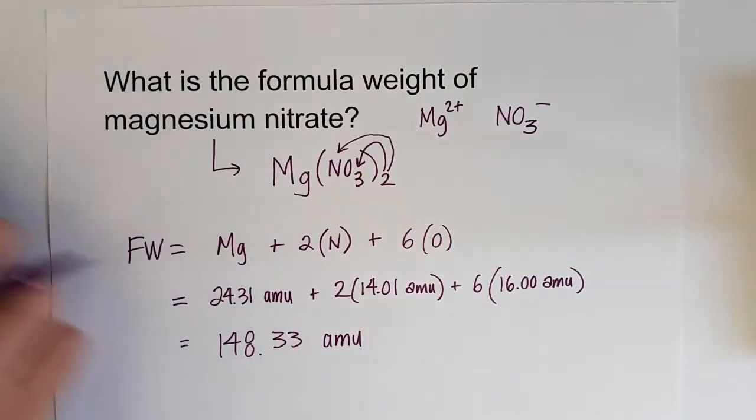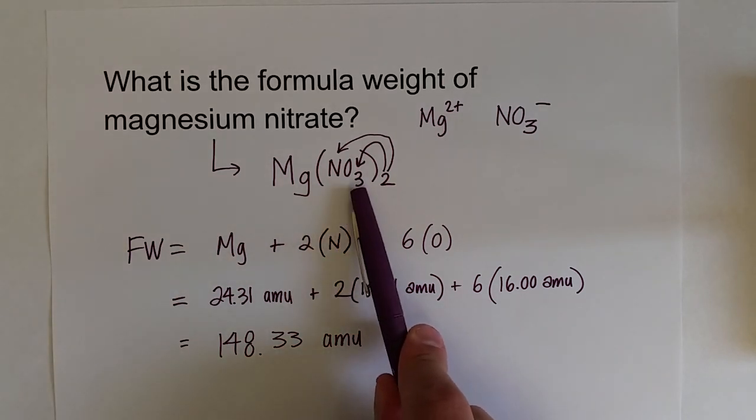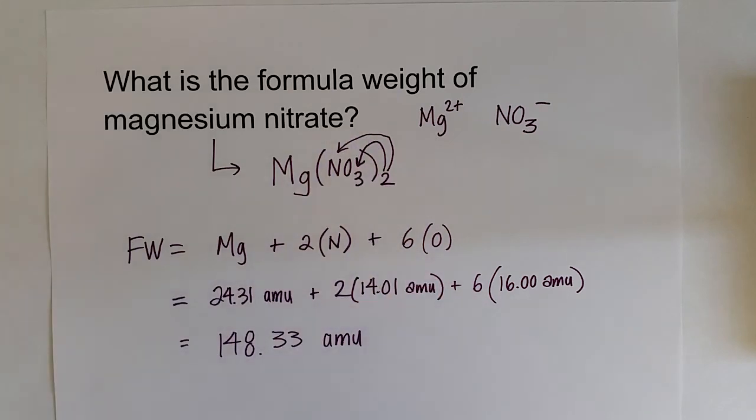That's the way to calculate formula weights and molecular weights. Same process for both. Just determine how many of each atom you have in the compound or molecule. Remember, if it's a polyatomic ion that has parentheses, you have to factor in that subscript. Look up the atomic masses on the periodic table, add them up, and report your final answer with the correct number of significant figures.